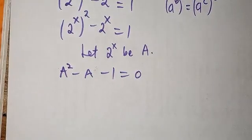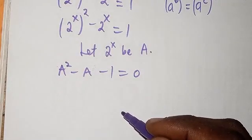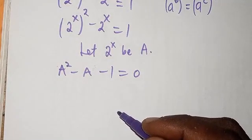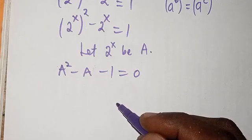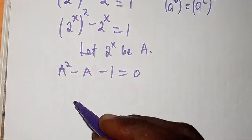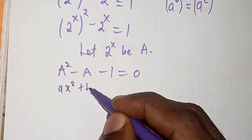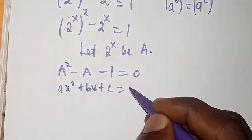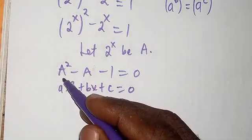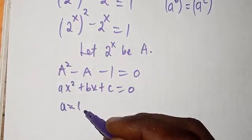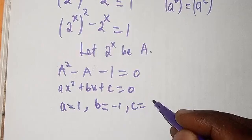This is a quadratic equation in terms of a. We can't use a factorization method here, so we are going to use the quadratic formula. Relating this with the standard quadratic equation a squared plus b times a plus c equals 0, we can see that the coefficient of a squared, capital A, is 1; b is minus 1; and c is minus 1.